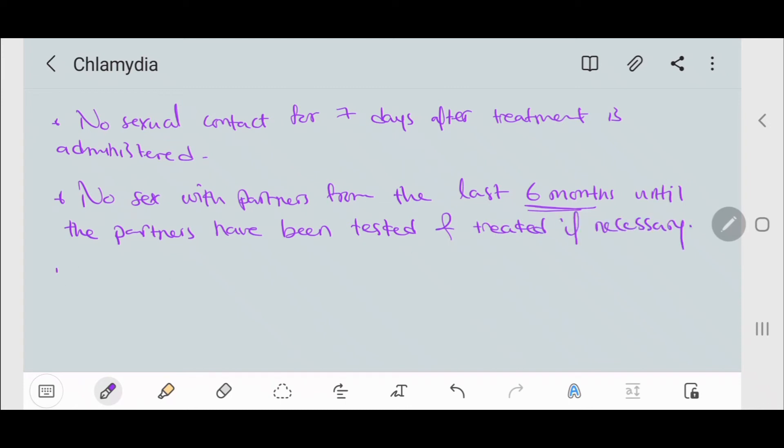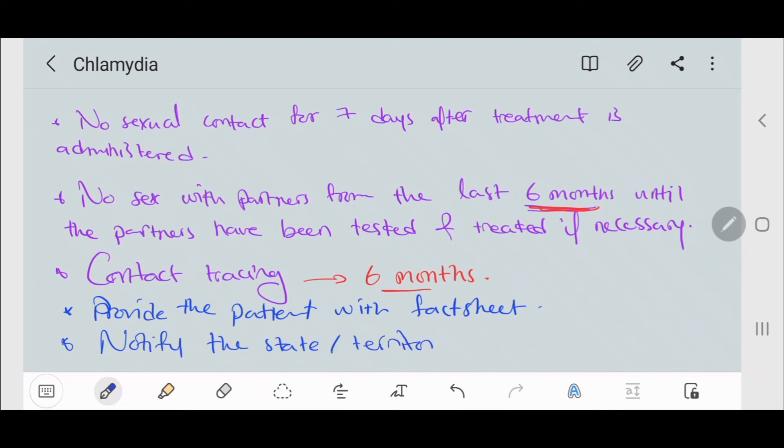Contact tracing is very important in all sexually transmitted infections. We trace back to six months in cases of chlamydia. We should also provide the patient with fact sheet for reading material and notify the state or territory health department.